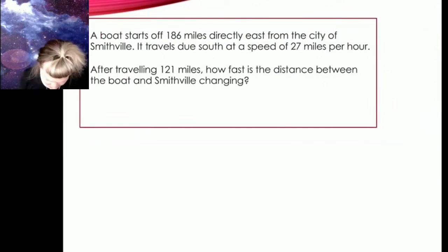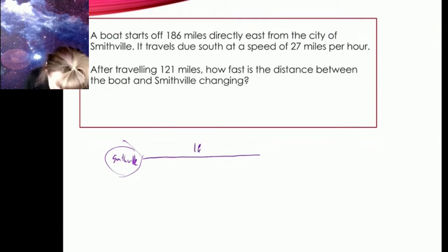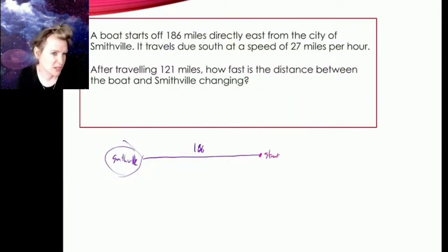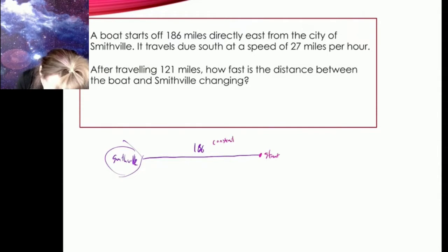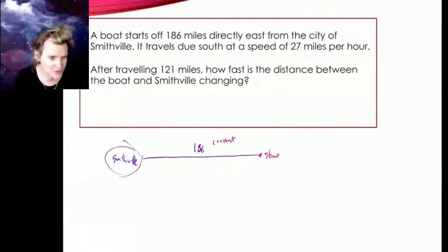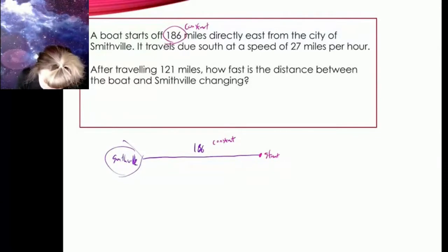We've got a boat starting 186 miles directly east of some city. Here's my city, Smithville — we're going to treat Smithville as a point — and we're going to say we're 186 miles directly east. That's where the boat starts, so think of it as t equals zero. This 186 is constant; it's not changing. The boat started 186 miles east and you can't change where you started, so 186 is truly a constant value.